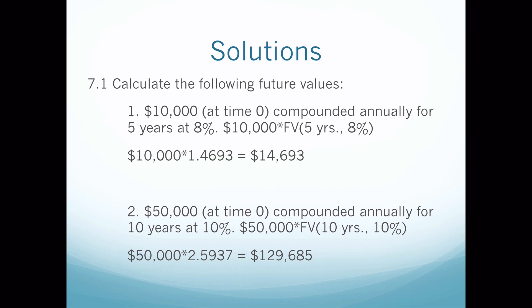The first thing I do when working any time value of money problem is write it out as a solution. So I have $10,000 times FV(5 years, 8%). That tells me I need to open the FV table, go to five years, look down at 8%, and I see the multiplier of 1.4693. I do my math and get $14,693 in future value. Because you're investing, your numbers always get larger — if you get a number less than $10,000, that's an automatic cue you've done something wrong.